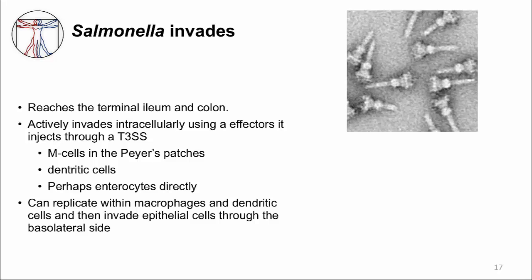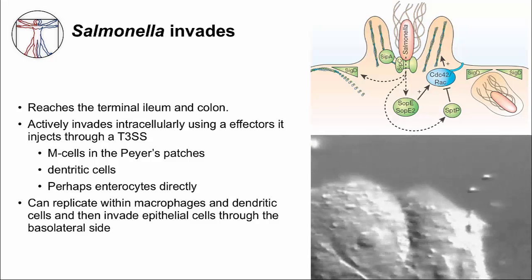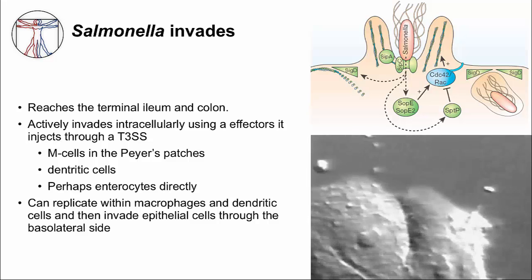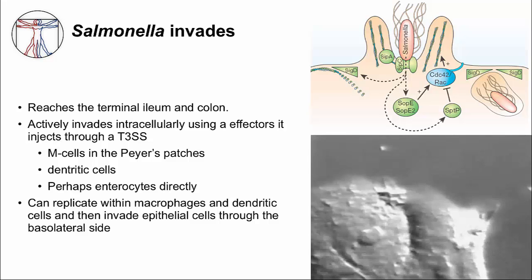Another strategy Salmonella uses to deal with competing resident microbiota is to invade cells — a niche the resident microbiota can't access. Like Shigella, it enters through M cells in Peyer's patches, and it also has type 3 secretion needles — two of them, not just one like Shigella. It uses one needle to inject effector molecules that affect the cytoskeleton, causing the host cell to engulf Salmonella in what is called a Salmonella splash.